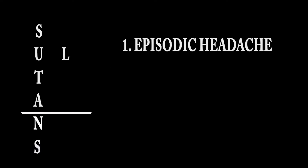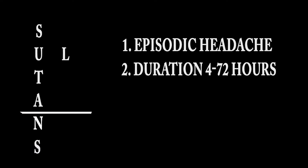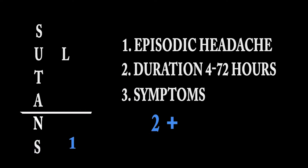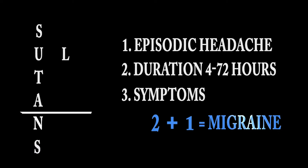A migraine is often defined as an episodic headache lasting a few hours to a few days. With two of the SULTANS features and one or two of the associated symptoms, you meet criteria for a migraine.